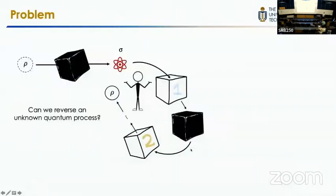To help you understand better the setting of this problem, we can think about this scenario. Suppose you have some quantum state rho which just passed through some unknown quantum process, as shown by the black box here. So now it becomes some unwanted state sigma.